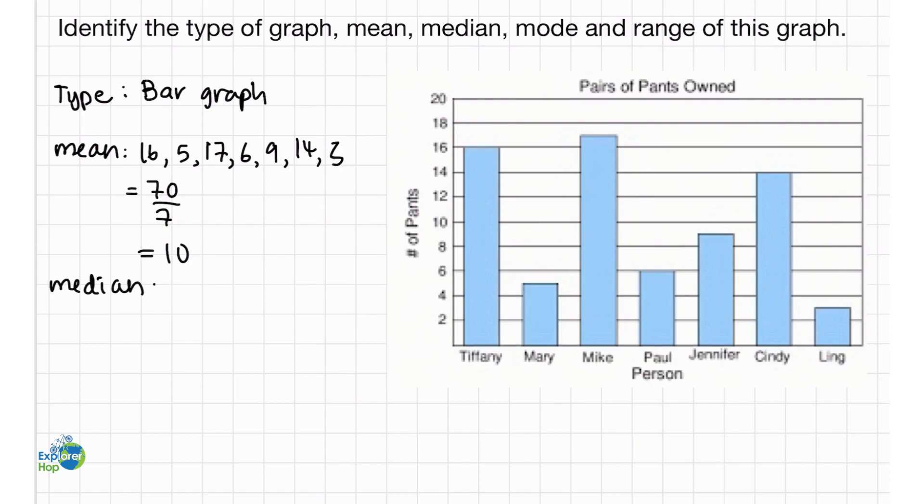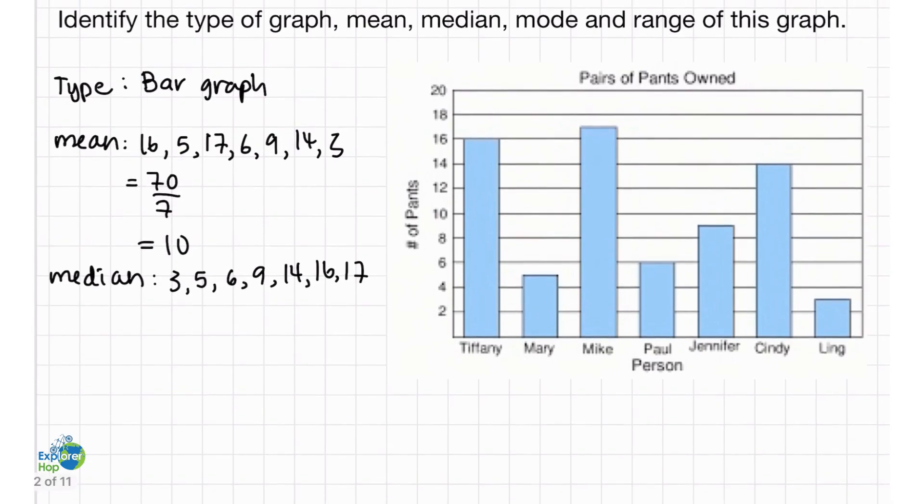Now, for the median, it is the middle number of a set of data that has been ordered properly. So, let's just rearrange the numbers in order. So, 3, 5, 6, 9, 14, 16, and 17. Great. As we can see here, our middle number is 9. Therefore, the median is 9.